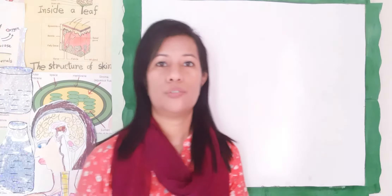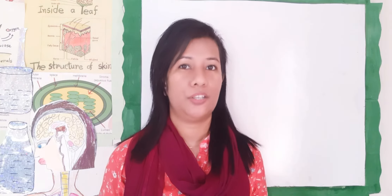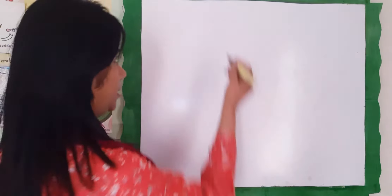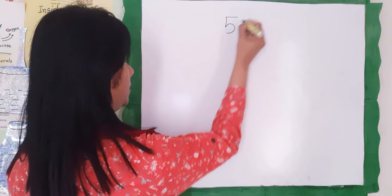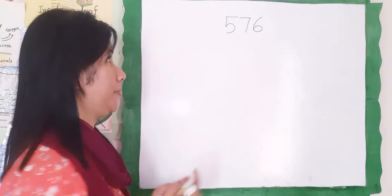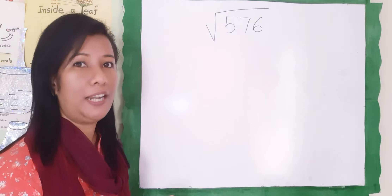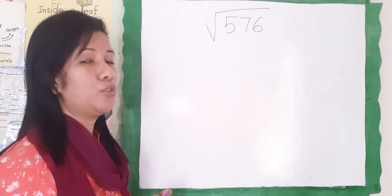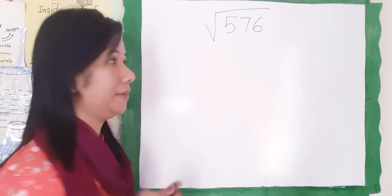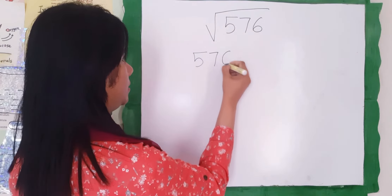So in this video I'm going to show you how, with a long number, you can find out a square root. So 576 — how do you find the square root? This is a very large number. You do it step by step: you will find out the prime number of 576.